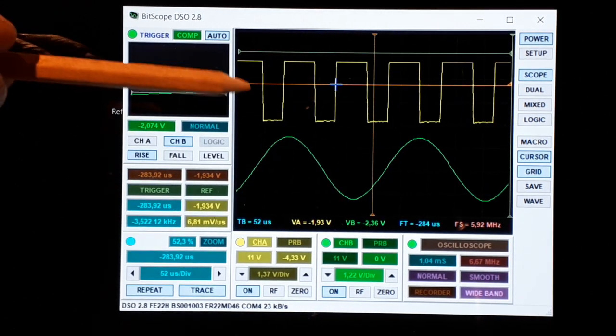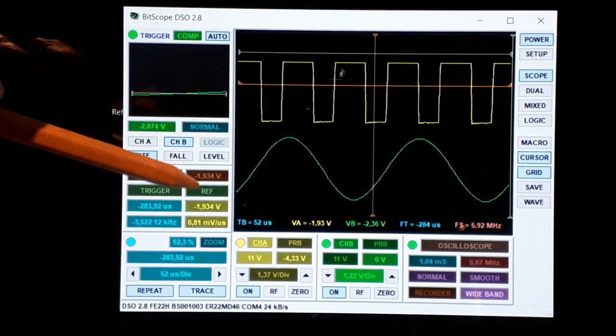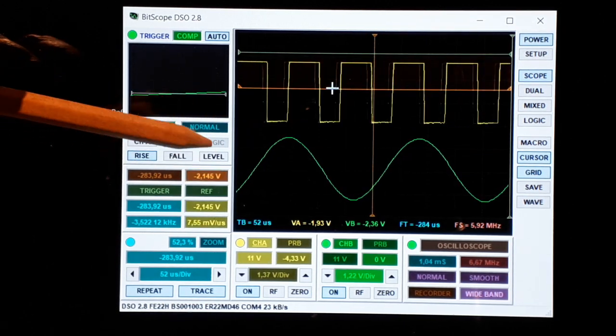So what we have here is that the orange one is this one, the green one is this one here. This one measures the voltage that is here.